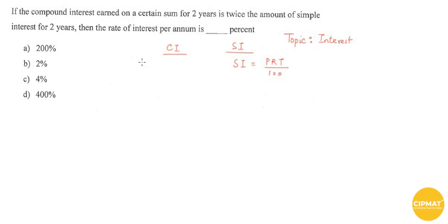For compound interest, the amount is given by P times (1 + R/100) to the power T, where R is the rate and T is the time.